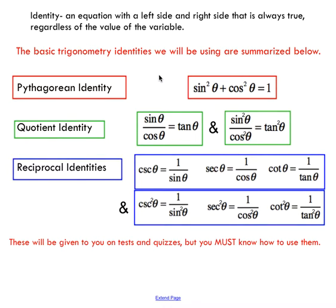Pretty much your goal with these things, you're going to be given a left and a right side, and you have to show that the left side is equal to the right side. And the way that you do that is by using basic trig identities. I'm not going to go over these in immense detail, but you will just see a summary here. These are going to be given to you on tests or quizzes, usually depending on who your teacher is.